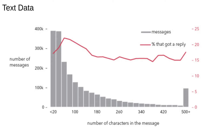One simple example of text analysis comes from the online dating site OkCupid. The bar chart shows the number of messages with a given character count. There's an interesting downward trend — most messages are short, but there are still some really long ones. The red line shows the proportion of messages sent that got a reply. There's a slight upward trend between 20 and 100 characters, but it's fairly flat. This implies that the length of your message has no relationship with how likely you are to get a reply.